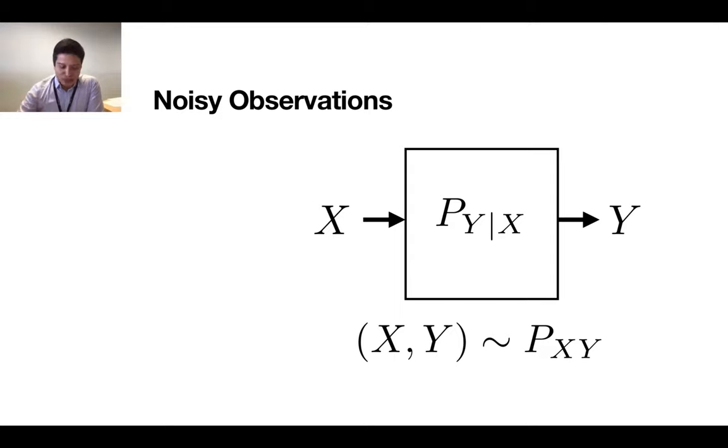I want to start putting at the center the main mathematical object that we use in our research, which is that of noisy observations. Given two random variables, x and y, with this joint distribution pxy, we can admit that y is a noisy observation of x when the observation takes place through an observation channel described by this conditional probability distribution p y given x.